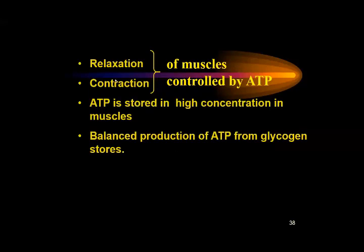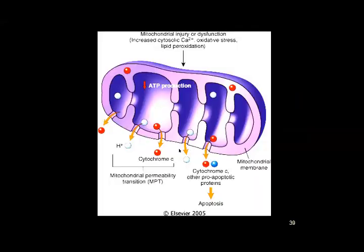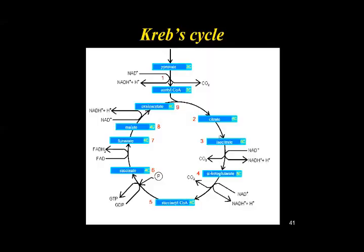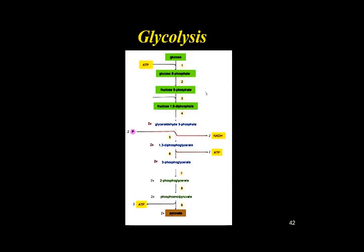This process is controlled by ATP, which is stored in high concentration in muscles. During life, ATP is produced by the mitochondria through the Krebs cycle — where glucose is converted to pyruvate, pyruvate to acetyl-CoA, which is broken down to produce large amounts of ATP. This occurs via oxidative phosphorylation and glycolysis. When oxygen is limited, anaerobic glycolysis takes effect.